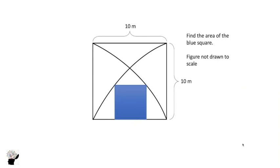So this is the question. We have a bigger square and a smaller square. We are told to find the area of the smaller square. The length of the bigger square is 10 meters, and it is not drawn to scale.